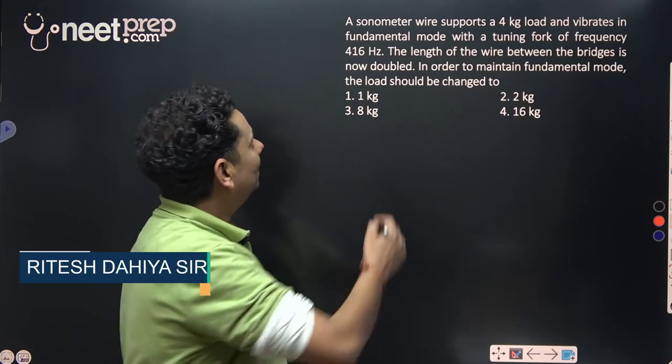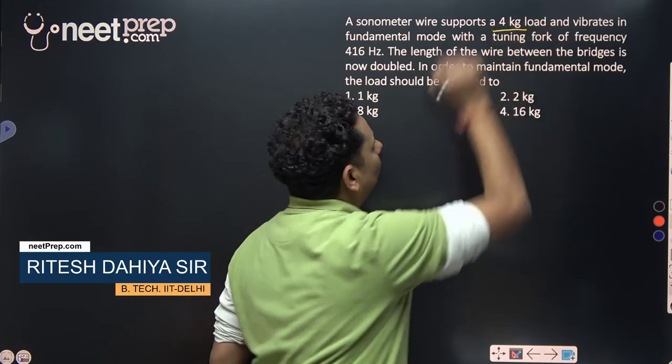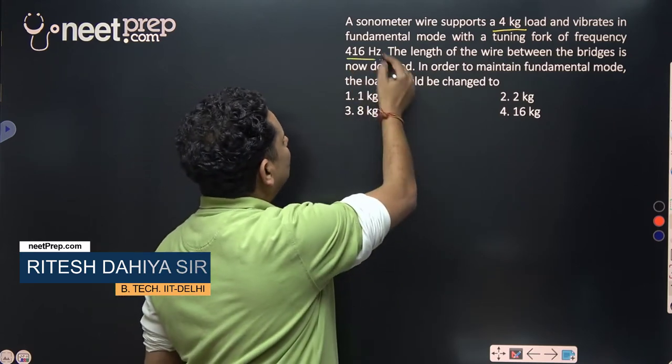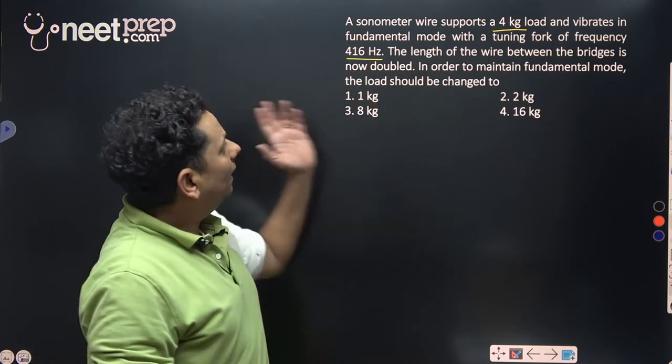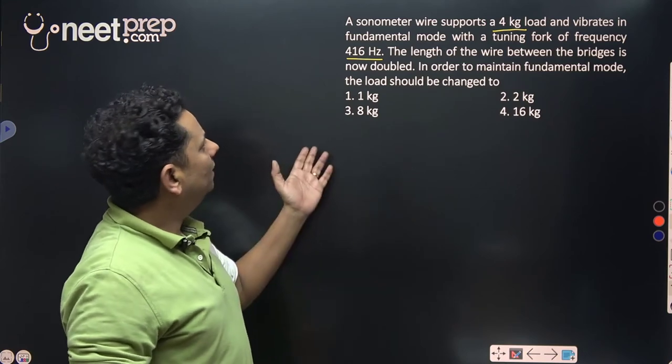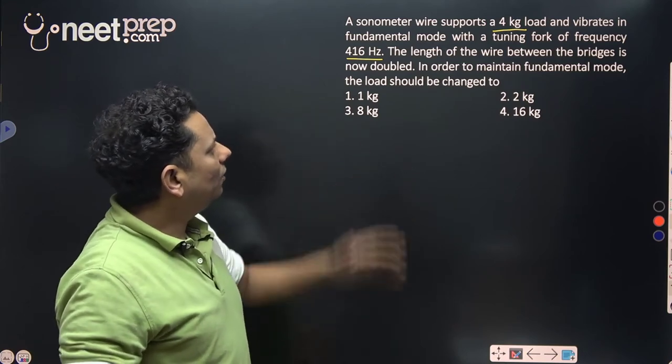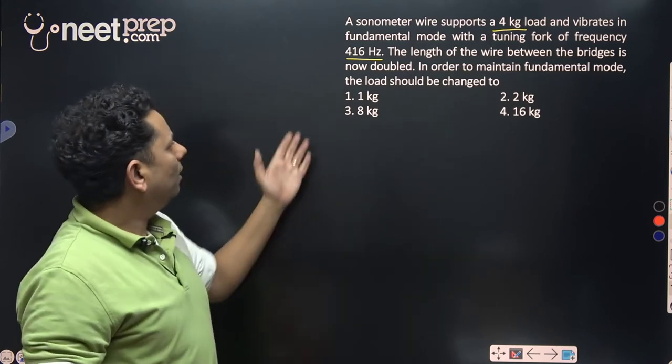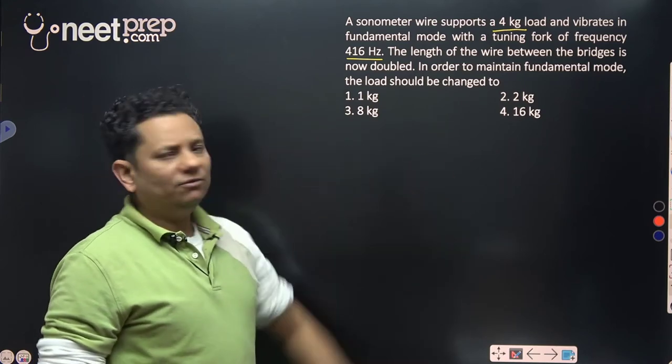A sonometer wire supports a 4 kg load and vibrates in fundamental mode with a tuning fork of frequency 416 hertz. The length of the wire between the bridges is now doubled. In order to maintain fundamental mode, the load should be changed to: 1 kg, 2 kg, 8 kg, or 16 kg.